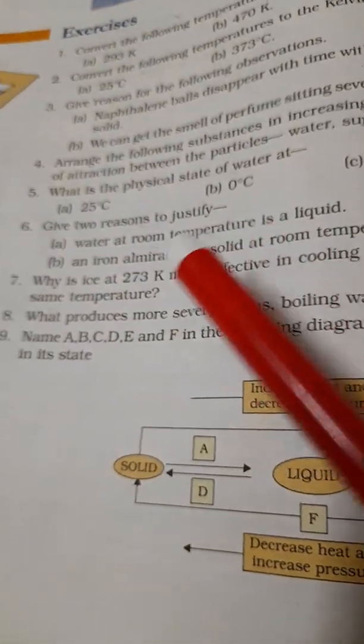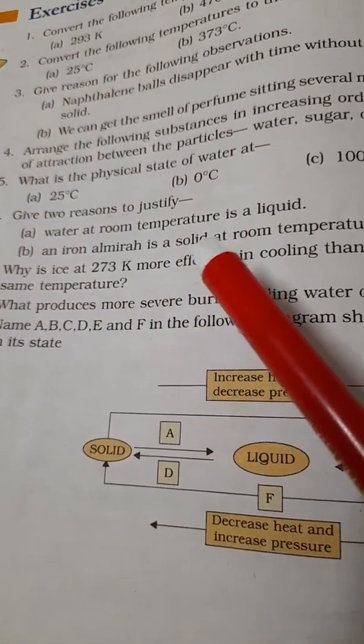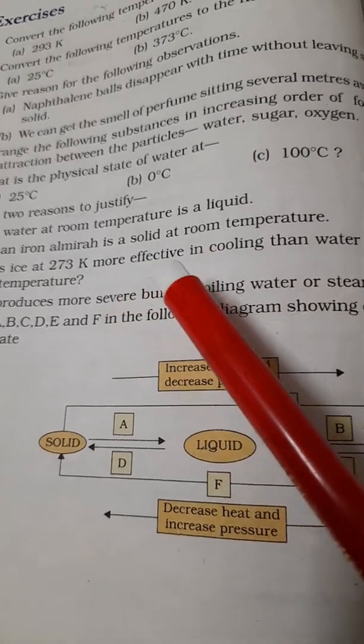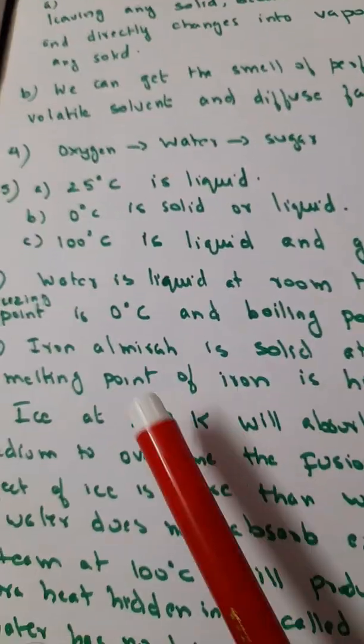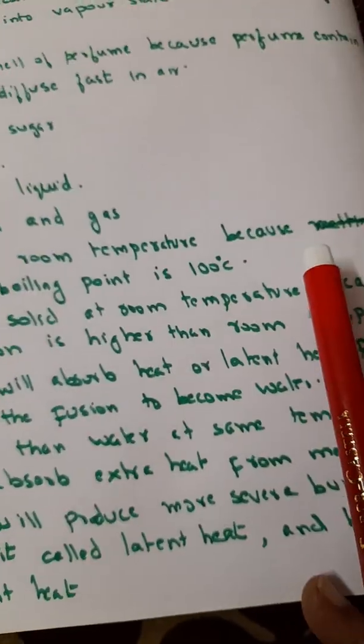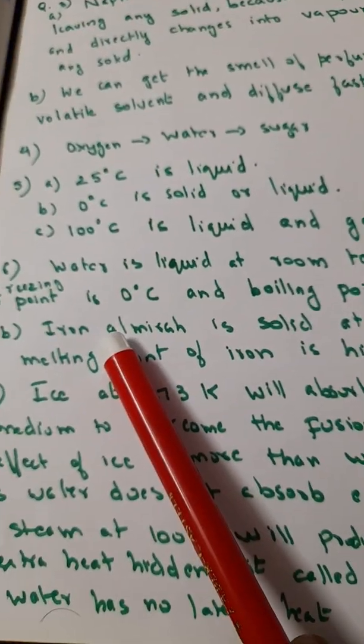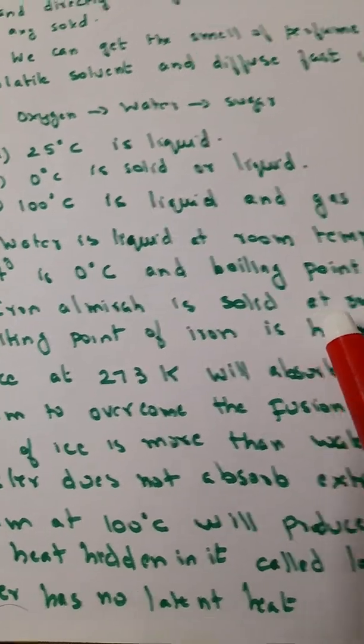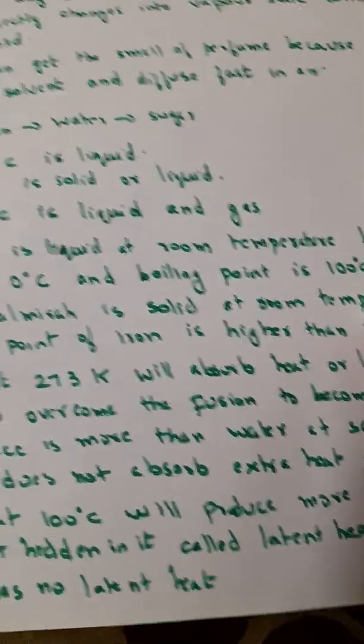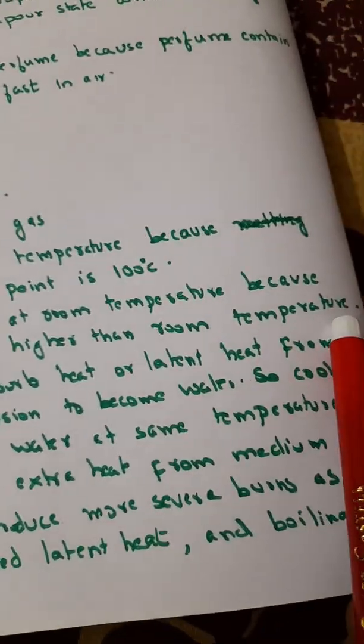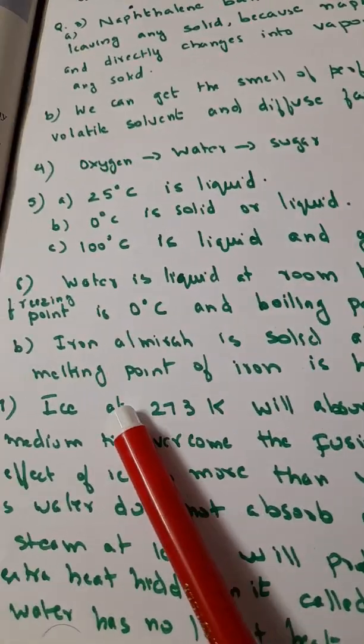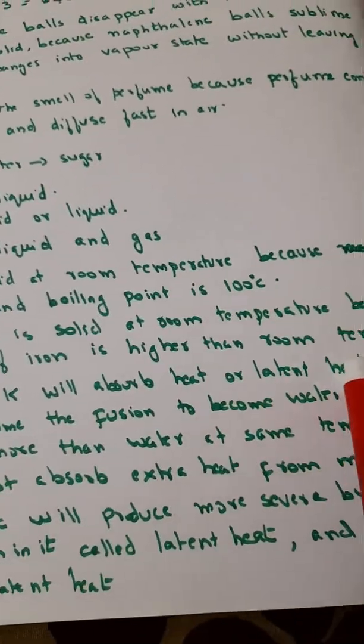Now give two reasons to justify question 6: water at room temperature is a liquid, iron alumina is a solid at room temperature. You know water is a liquid at room temperature, why? Because the freezing point of water is 0 degrees Celsius and boiling point is 100 degrees Celsius. And alumina is solid at room temperature, why? Because the melting point of iron is higher than room temperature. Fine.